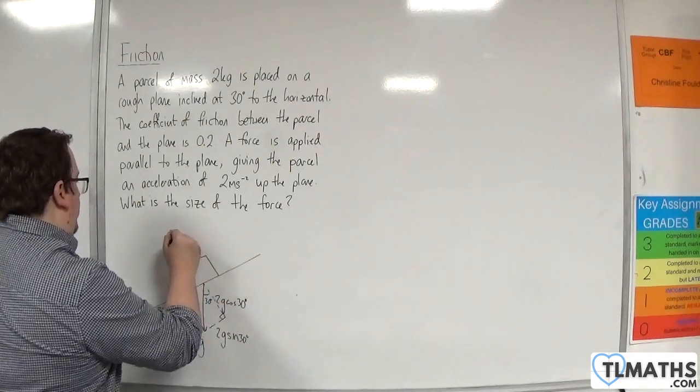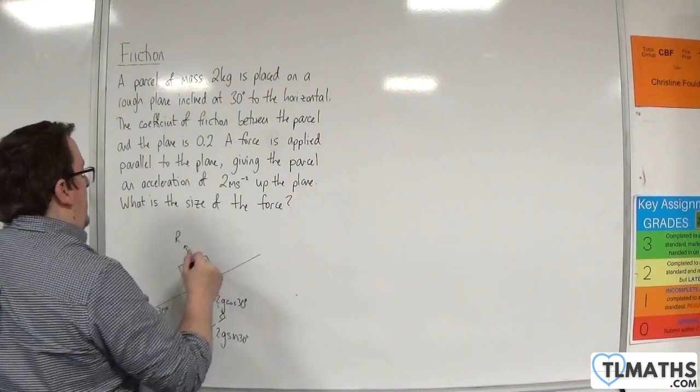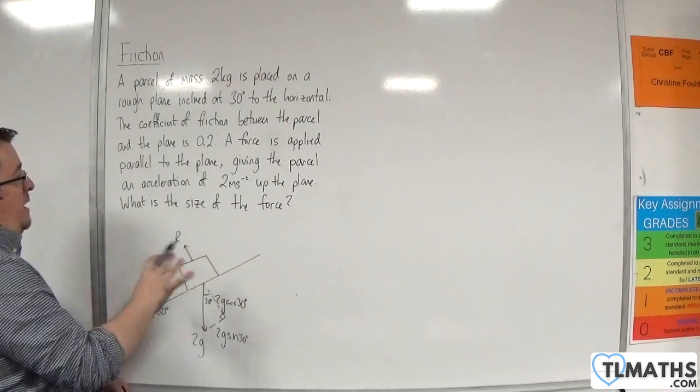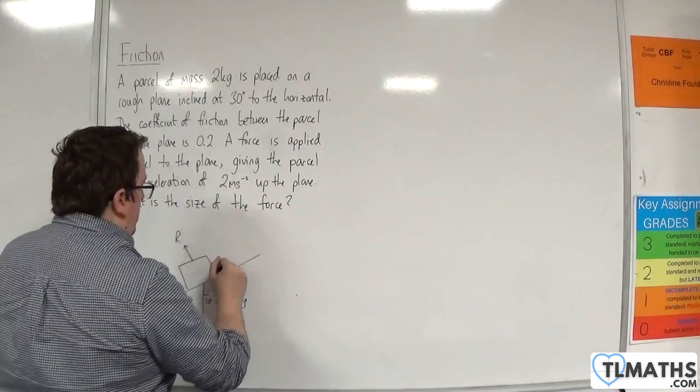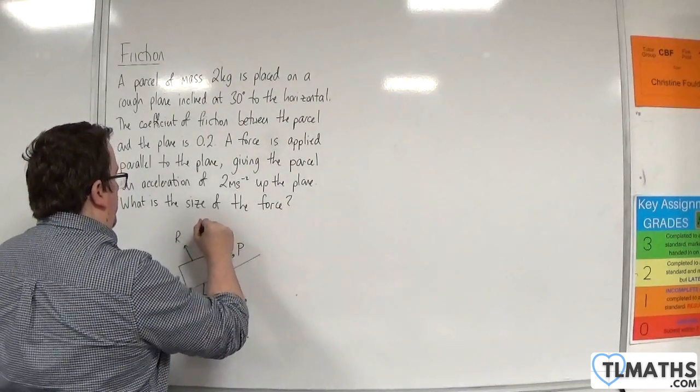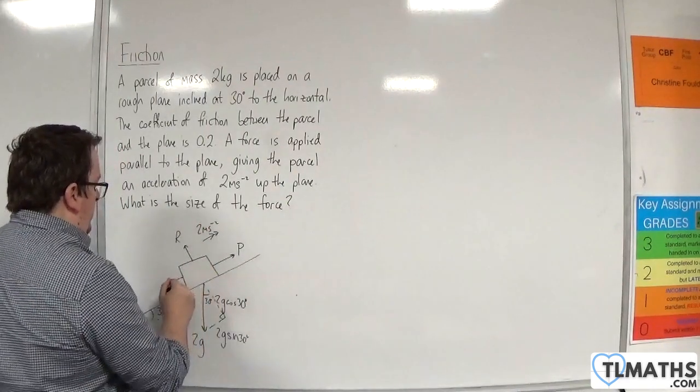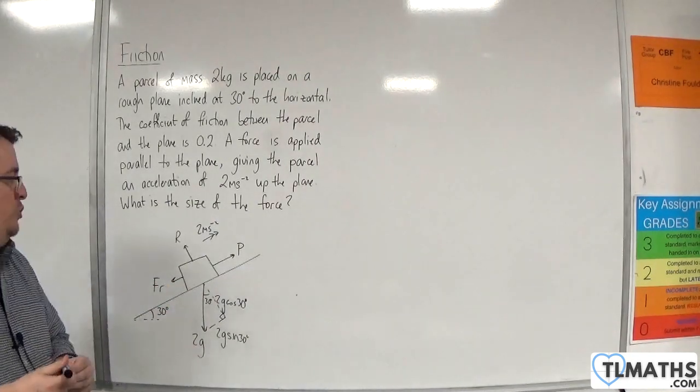It's in contact with the surface, so there's a normal reaction force. A force is applied parallel to the plane that's going to be pushing it up because it's accelerating at 2 metres per second per second up the plane. I'm going to call that P, and we've got the acceleration of 2 metres per second per second. Because it's rough, there will be a frictional force, FR, working against the direction of motion.